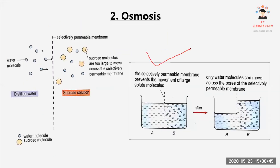Now looking at a larger diagram: area B has a low water potential, while area A has a high water potential. So the water molecules from area A will move into area B.